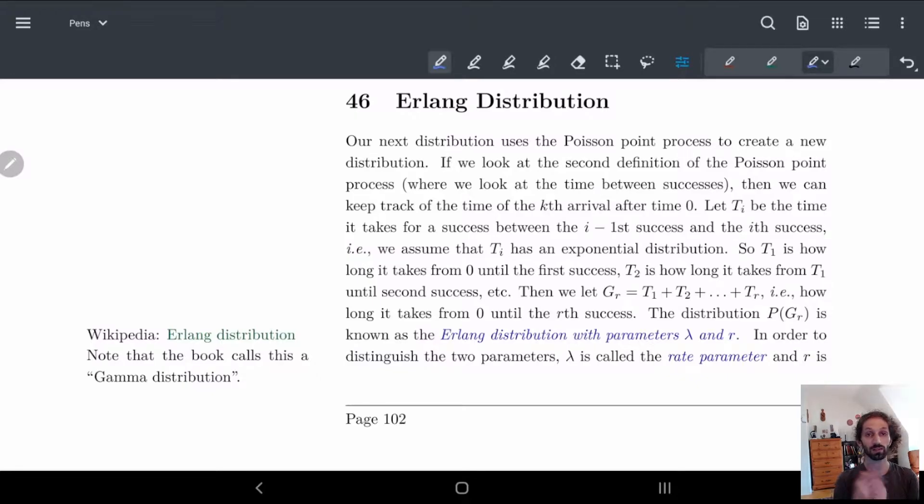Remember how in the last example we had these ti's, right? So basically I said, well, let ti, and I think I have it here, yeah. So basically we're going to let ti be the time between certain successes. So in other words, we let ti be the time it takes for success between the i-th first success and the i-th success. So t1 is how long it takes for the first success, t2 is how long it takes between the first and the second success, etc.